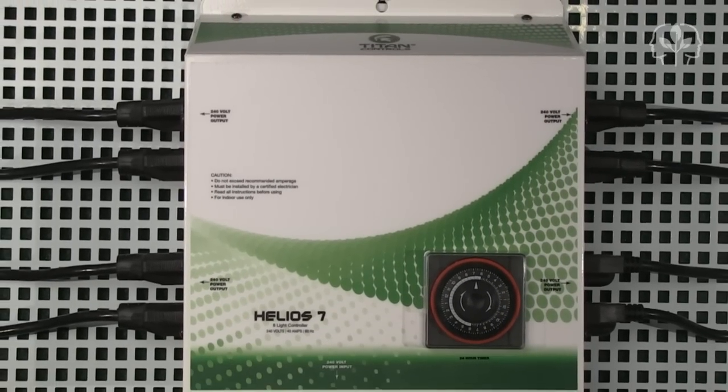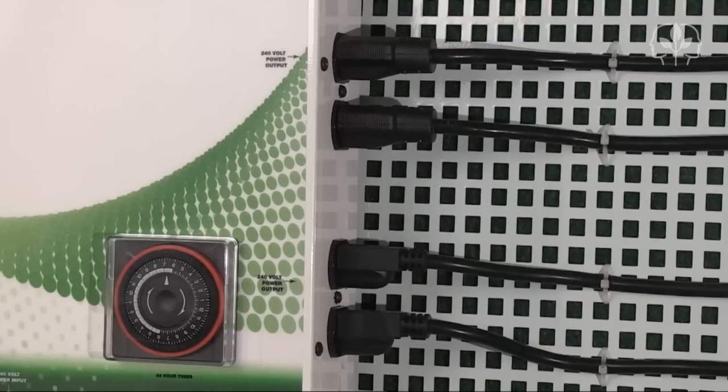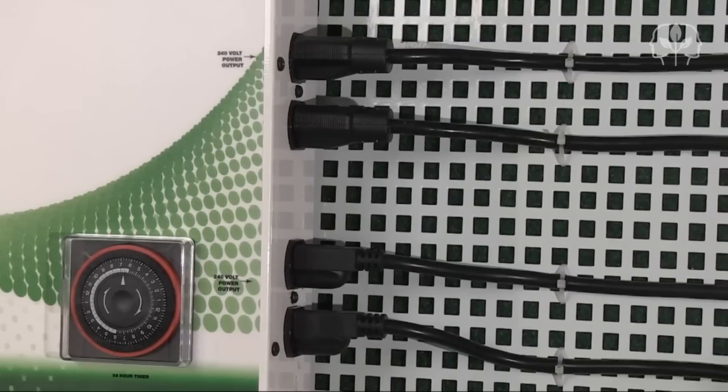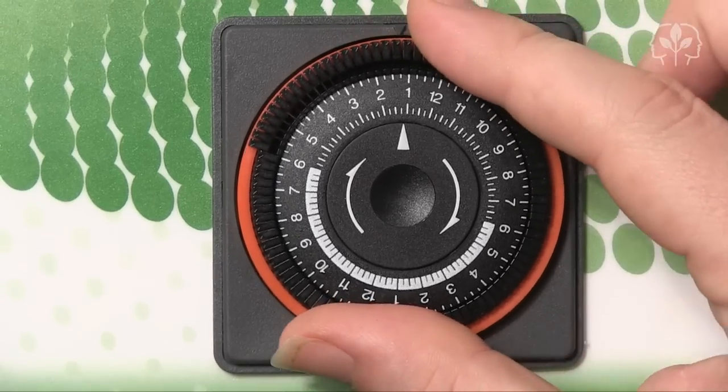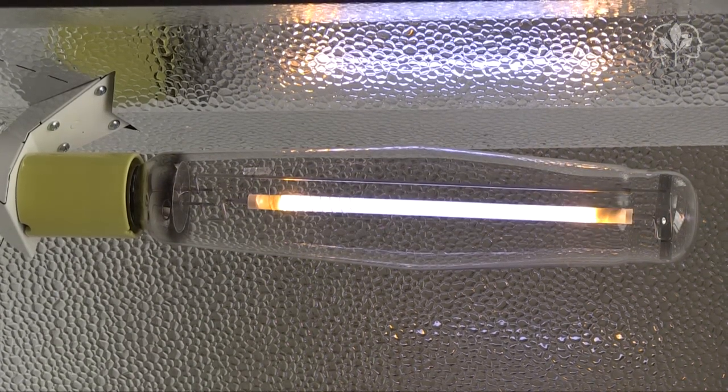Securely mount your lighting controller on a wall. Ideally, it should be adjacent to, not in, your indoor garden. When the lighting controller is switched on via the analog timer, you will hear a clunk sound. This is perfectly normal. And that's it.